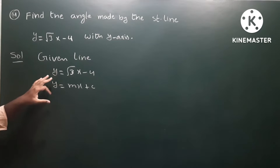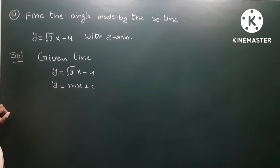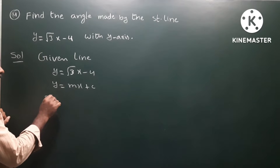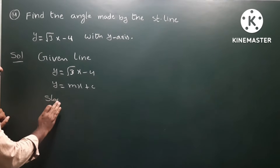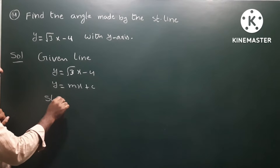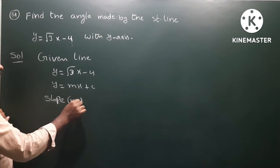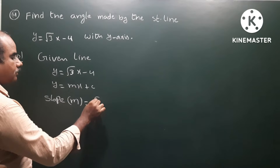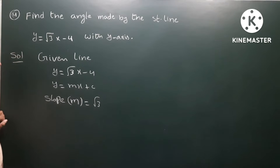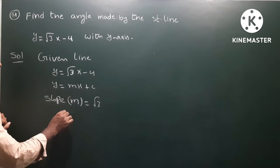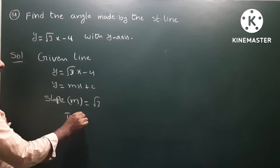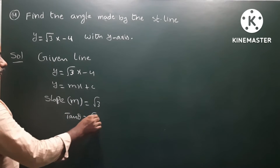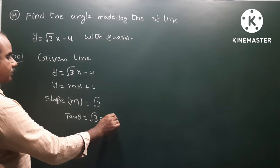The slope-intercept formula is equal to the original form. By comparing these two equations, we get slope m = √3. So slope m = √3, and √3 represents tan(60°).